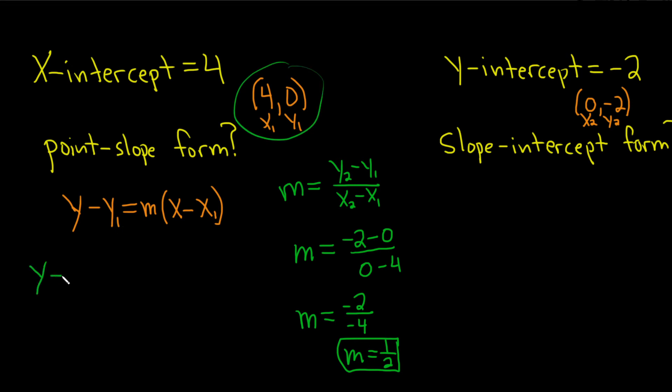So y minus 0, because that's our y1, is equal to m, which is 1 half, times x minus x1. That's our 4. And that's it.